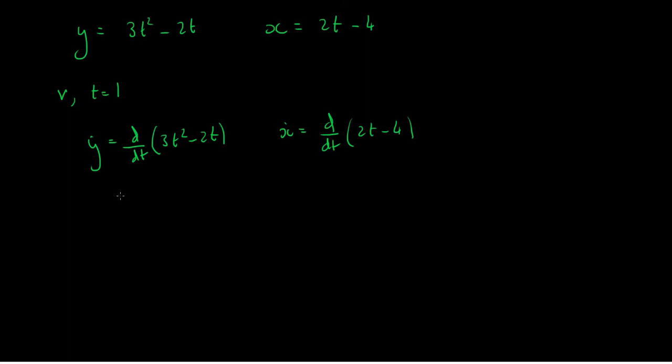Okay, and this ends up being then 6t minus 2, and x-dot is equal to 2.